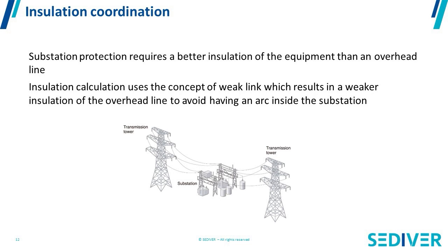Of course, in a substation you also have other protections — surge arresters, circuit breakers, all kinds of equipment to protect it. But the basic first fundamental rule in insulation coordination is that by definition, you design your overhead line as the weak link. So if any arcing activity occurs, it happens on the line and not in the substation.